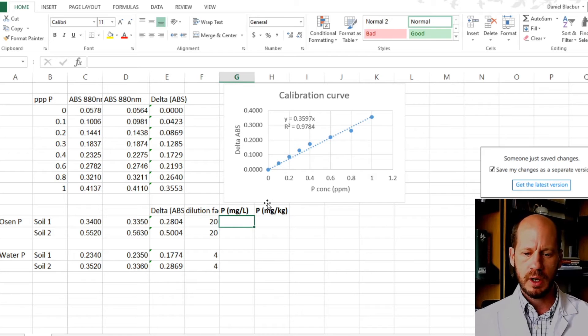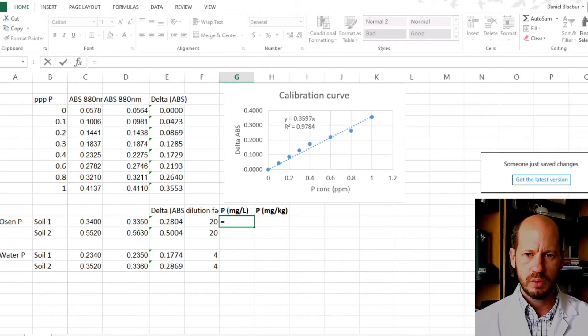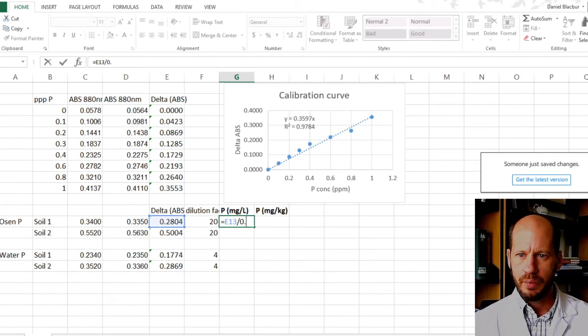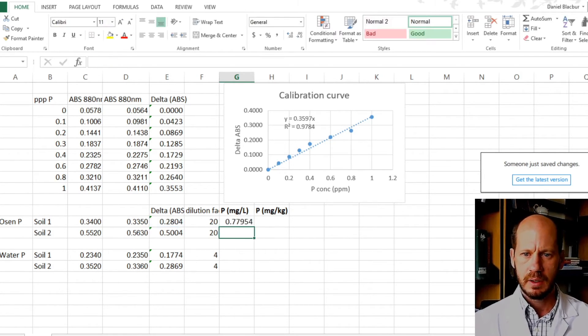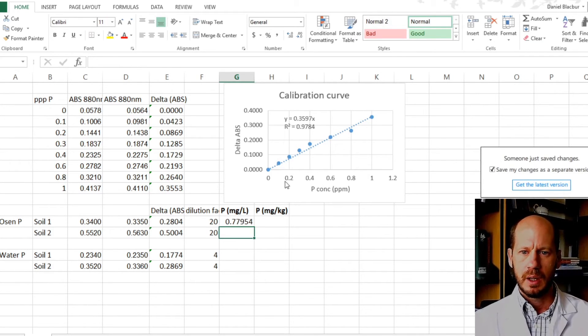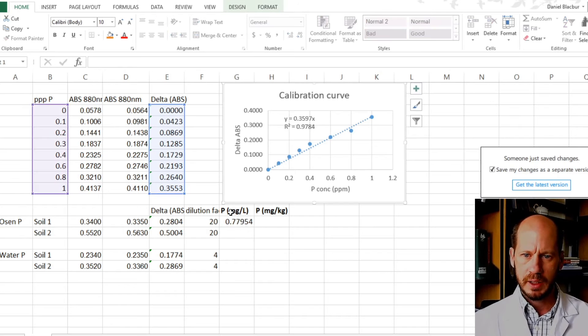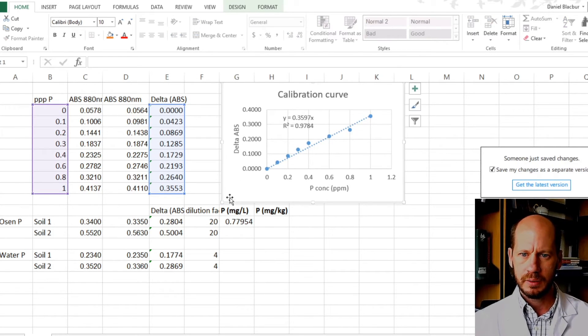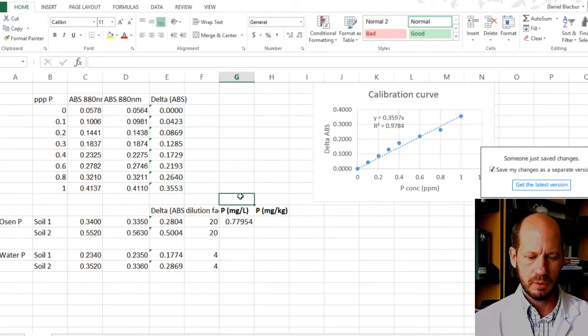What you're going to do first is calculate the mg per liter. To calculate the mg per liter, as we did last time, you divide the delta absorbance by that number, the extinction coefficient, 0.3597. This will give you the mg per liter in the extract. This is the mg per liter in the extract.